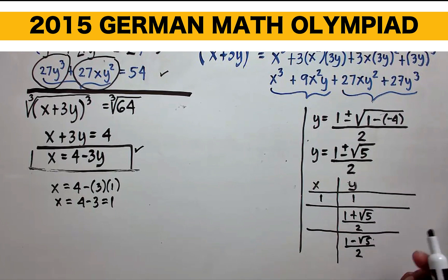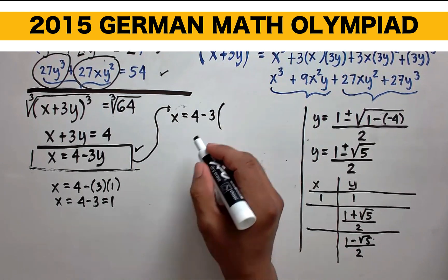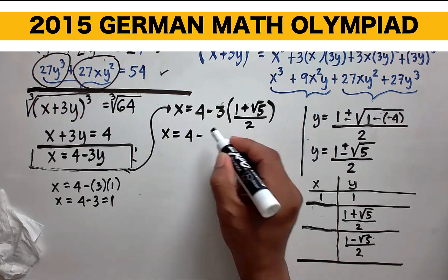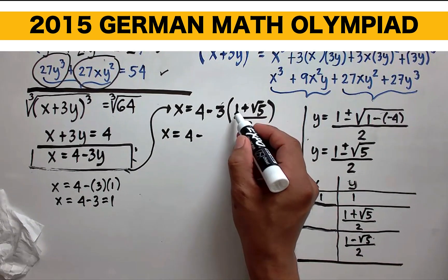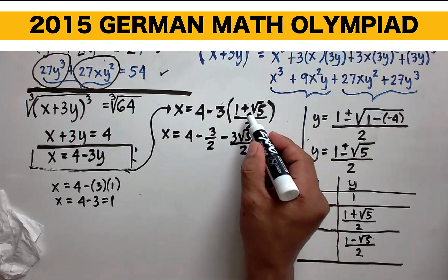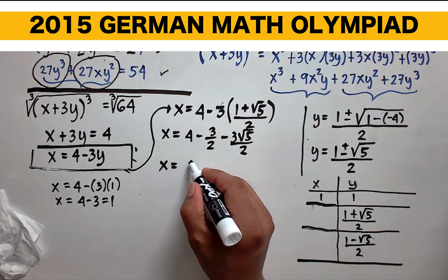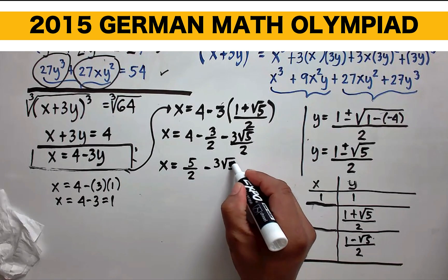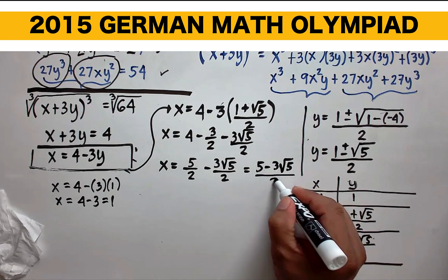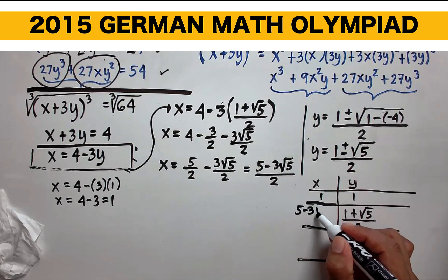When y is (1 plus the square root of 5) over 2, x equals 4 minus 3 times (1 plus the square root of 5) over 2. Distributing: negative 3 times 1 over 2 is negative 3 halves, minus 3 square root of 5 over 2. So x equals 4 minus 3 halves minus 3 square root of 5 over 2. Since 4 minus 3 halves is 5 halves, this gives x equals (5 minus 3 square root of 5) over 2.